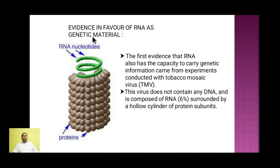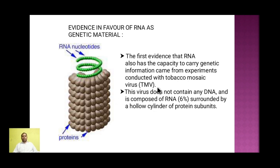Let's see what were the evidences in favor of RNA as a genetic material. The TMV virus has a proteinic coat outside and a single-stranded RNA inside. The first evidence that RNA has the capacity to carry genetic information came from experiments with tobacco mosaic virus. This virus does not contain any DNA — it has only 6% RNA and is surrounded by a hollow cylindrical proteinic subunit as shown in the figure.